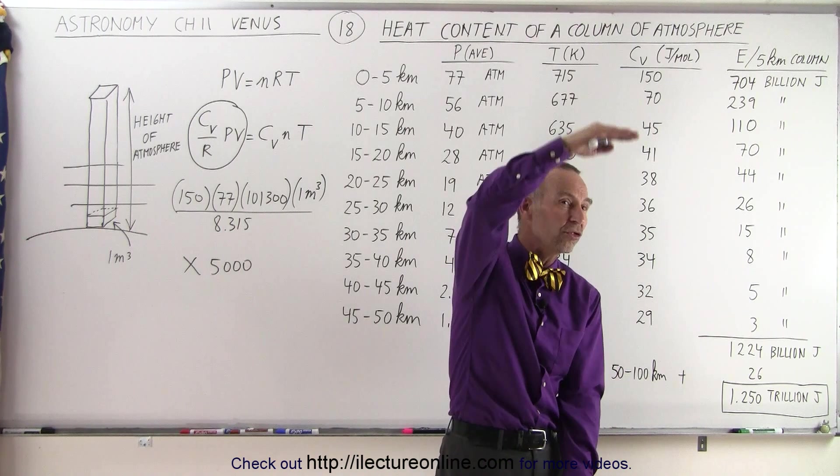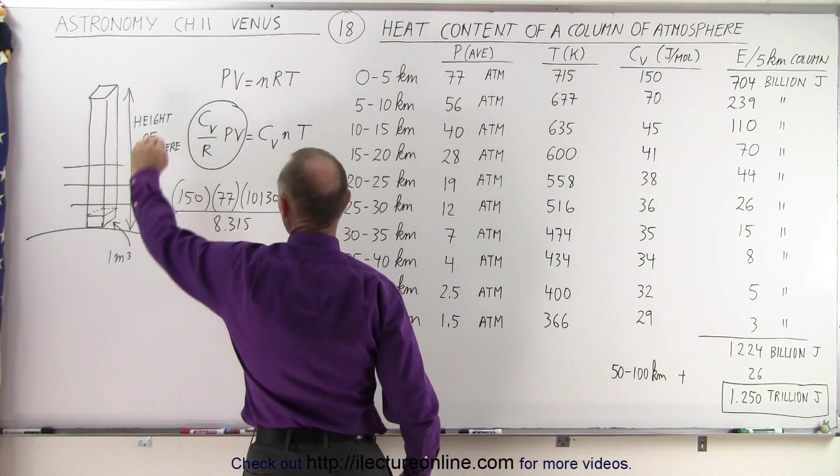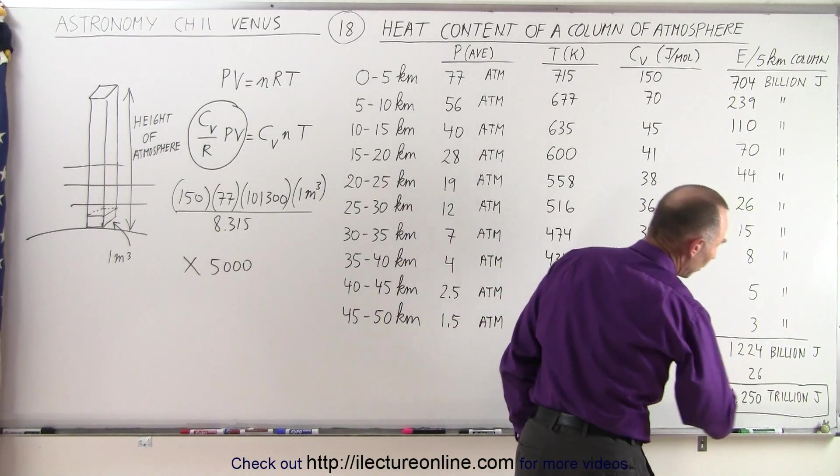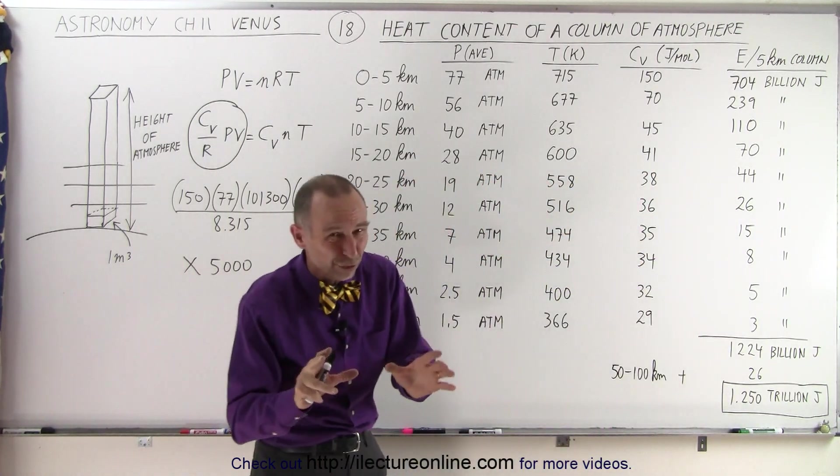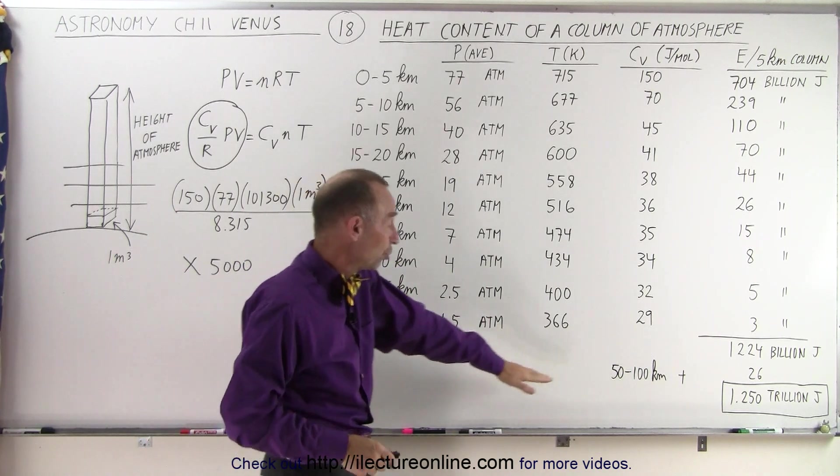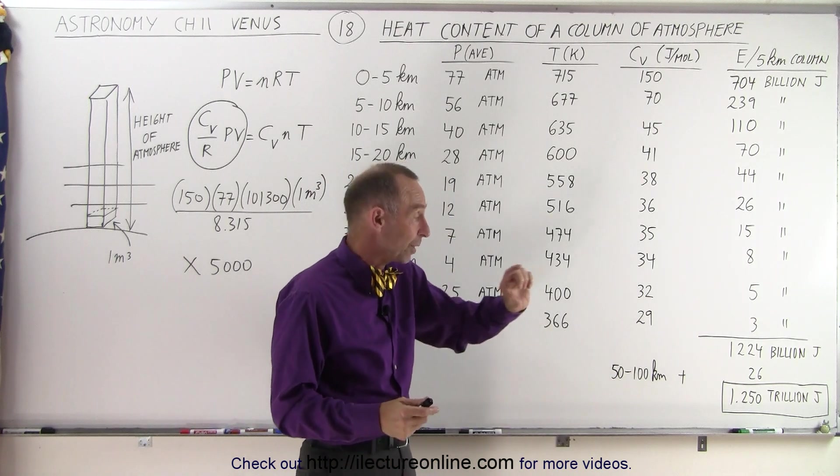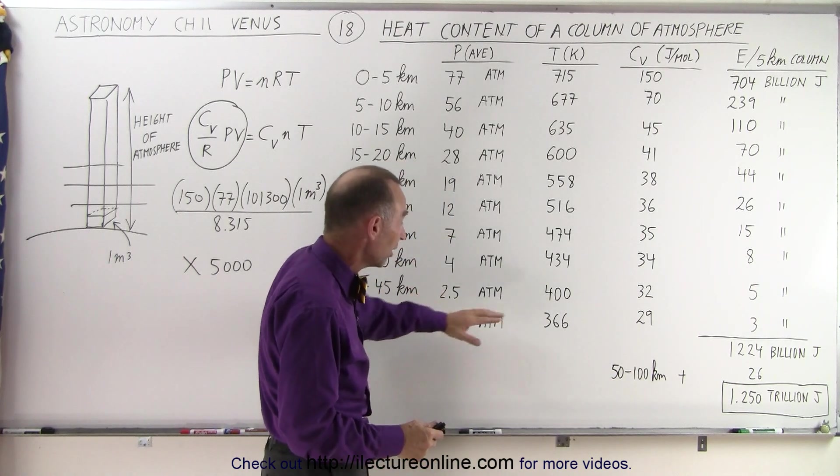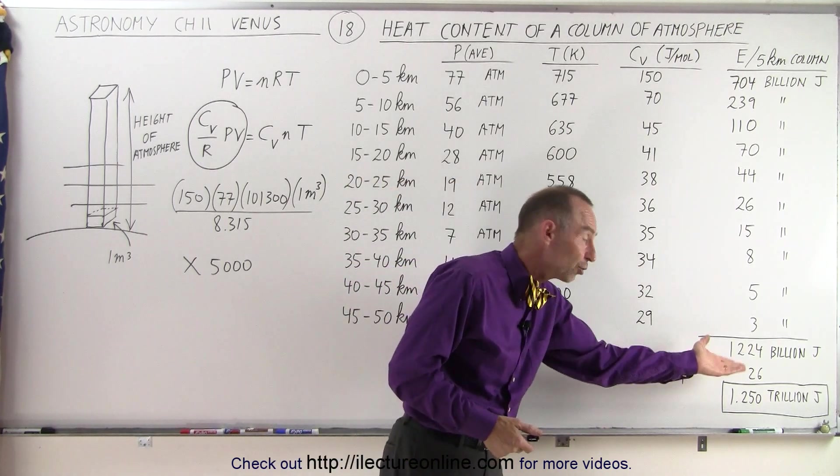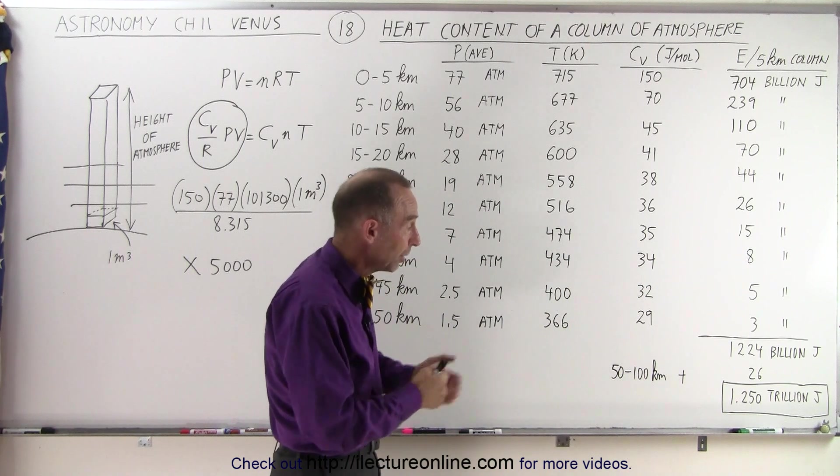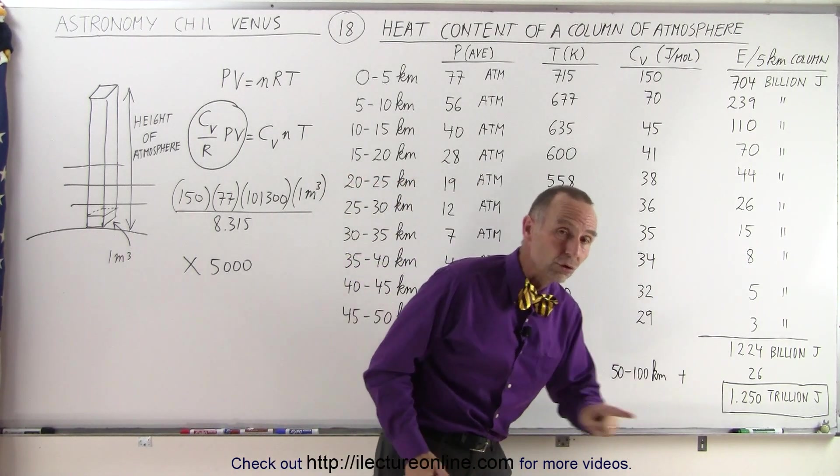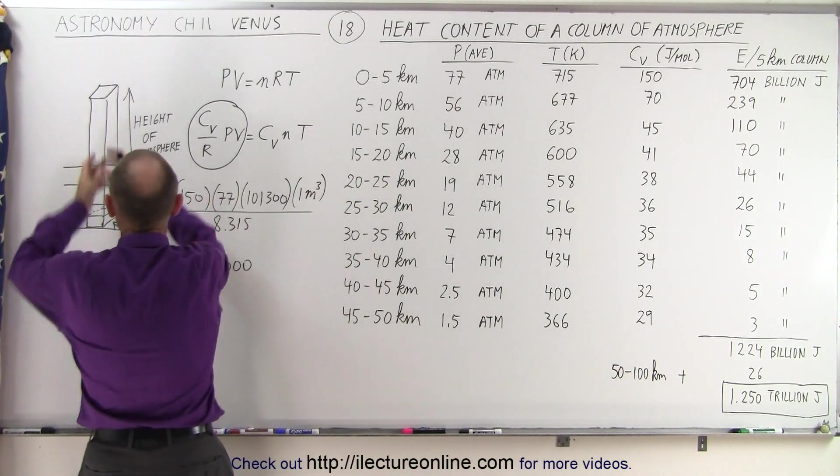When we add up all those sections, 5 kilometer sections, 10 of them, all the way up to 50 kilometers, the heat content is 1224 billion joules. Now these are, of course, approximate values. They're not extremely accurate, but it's a good estimate. And then presuming that the next 50 kilometers, where the atmosphere is much thinner with a much lower temperature, we can assume that we probably can add another 26 billion joules, so that it adds up to one and a quarter trillion joules of energy within a single column of atmosphere on Venus.